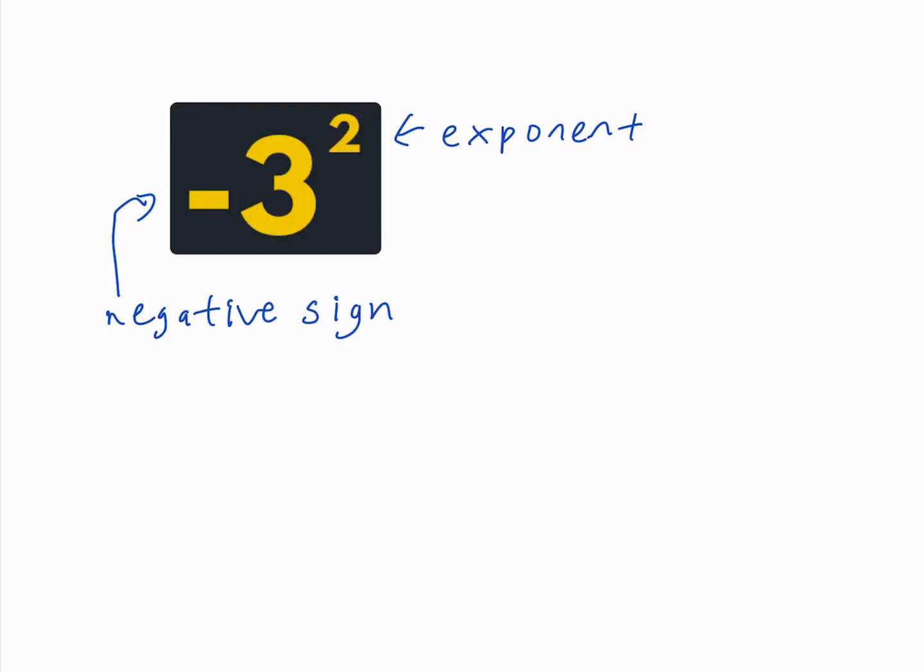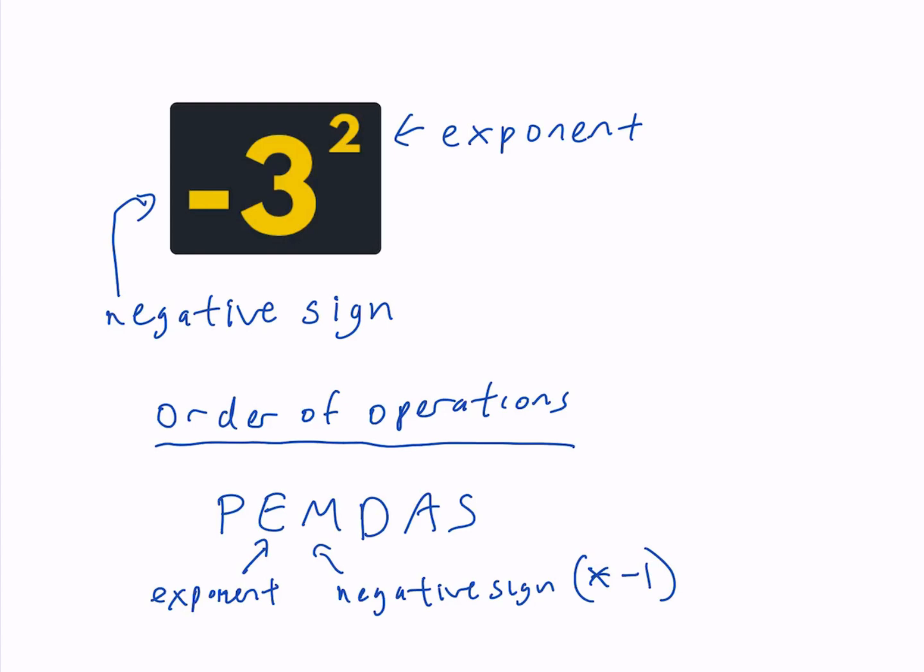Let's start with the left hand side. We see an exponent and a negative sign. In math there's something called the order of operations which tells us in what order to apply these operations. The important thing here is that exponents go before negative signs.